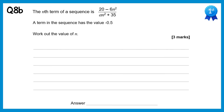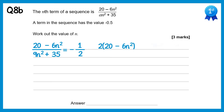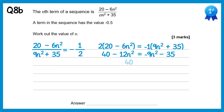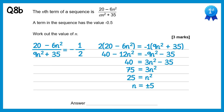We're also told a term has the value negative 1 half, and we need to find n. Since a equals 9, we write the nth term with 9 in place of a, set equal to negative 1 half. Cross multiplying gives 2 lots of 20 minus 6n squared equals negative 1 lots of 9n squared plus 35. Expanding: 40 minus 12n squared equals negative 9n squared minus 35. Adding 12n squared to both sides gives 40 equals 3n squared minus 35. Adding 35 gives 75 equals 3n squared. Dividing by 3 gives n squared equals 25, so n equals plus or minus 5. Since n must be positive, n equals 5 — the 5th term.